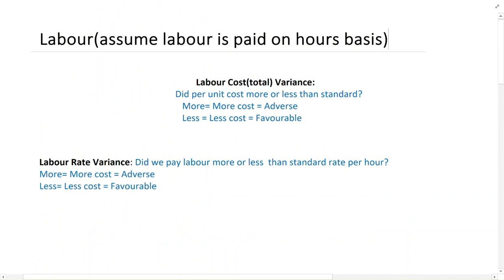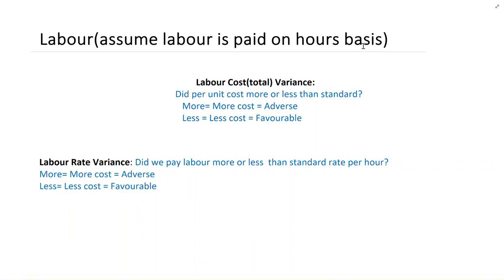Next, we have labor variance. Just like material variance, in total we want to look at the labor cost per unit — whether we have spent more or less per unit. If we spend more, it would be adverse; if we spend less, it would be favorable. In variance analysis, we assume that labor is paid on an hourly basis. If labor is paid on a piecework basis, then these variances don't make sense. So the assumption would be that labor is paid on an hourly basis.